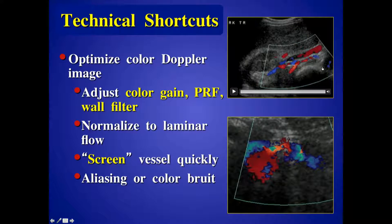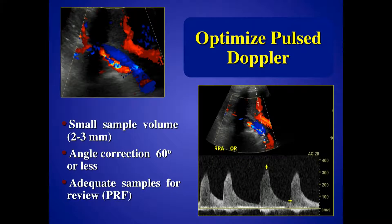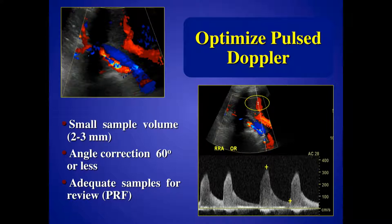By adjusting your PRF and looking for flow disturbances, you're able to easily see aliasing when it occurs. Here's an example of focal aliasing at the origin of the left renal artery, which tells you there is likely a stenosis there, particularly when it's paired with a color bruit artifact. Also make sure the sample volume is relatively small — just in the lumen — so you're not getting conflicting signals or overlapping waveforms.